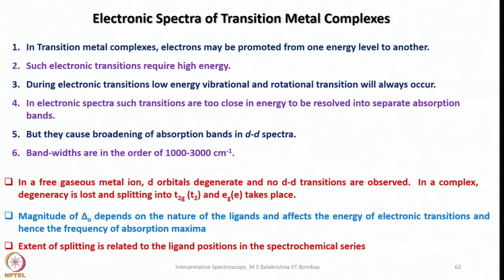But in a complex, degeneracy is lost because of ligand field splitting the orbitals into two or more levels. For example, in an octahedral field we have the T2g set composed of dxy, dxz, and dyz orbitals, which is lower in energy, and the higher energy Eg level composed of dx²-y² and dz² levels. But in tetrahedral, the opposite happens — E will be the ground state (HOMO) and T2 will be the LUMO level.